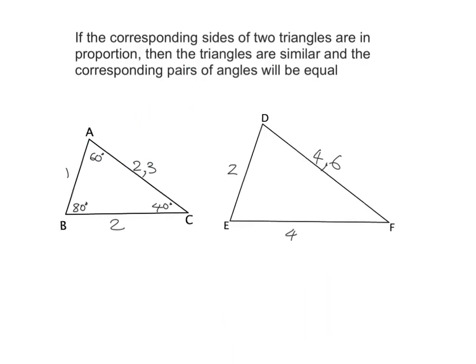To summarize: if we see two triangles where every side of the first triangle has been grown or shrunk by a certain factor to produce the second triangle, then we know these two triangles are similar and the corresponding angles will be equal.